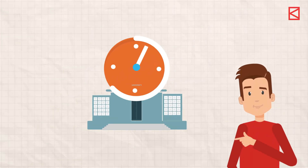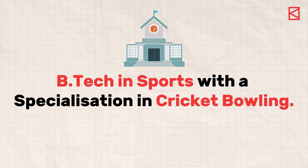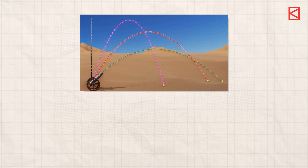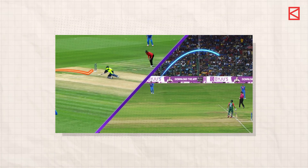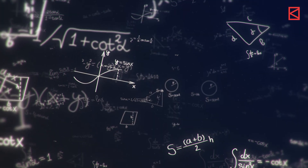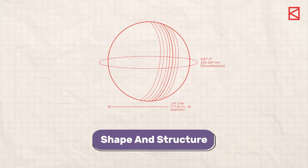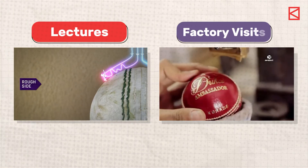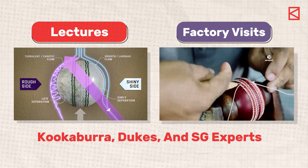Imagine if engineering colleges in India introduced a new course — a BTEC in sports with a specialization in cricket bowling. In this course you will learn projectile motion equations and calculate the path of a thrown ball. Using cosine and sine functions, you will figure out the best angles for releasing the ball. Going deeper into maths, you will study solid and differential geometry to understand the shape and structure of cricket balls. You will also have lectures and factory visits on ball manufacturing guided by Kookaburra, Dukes, and SG experts.